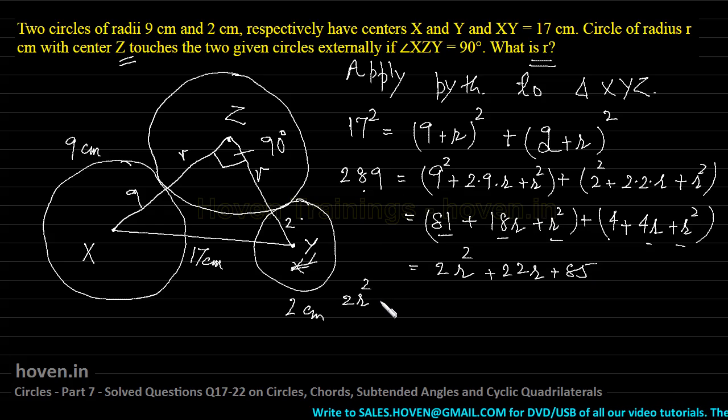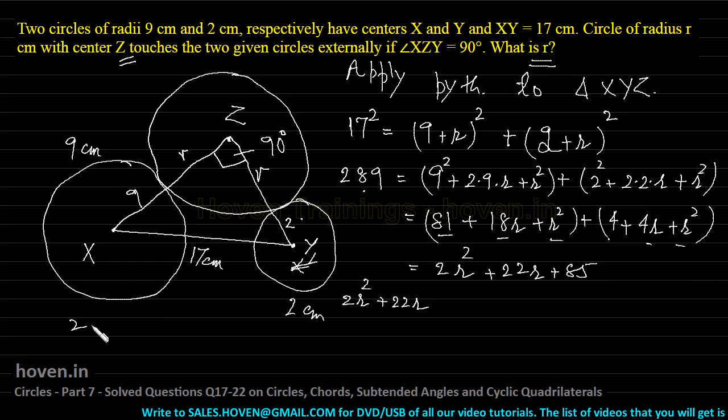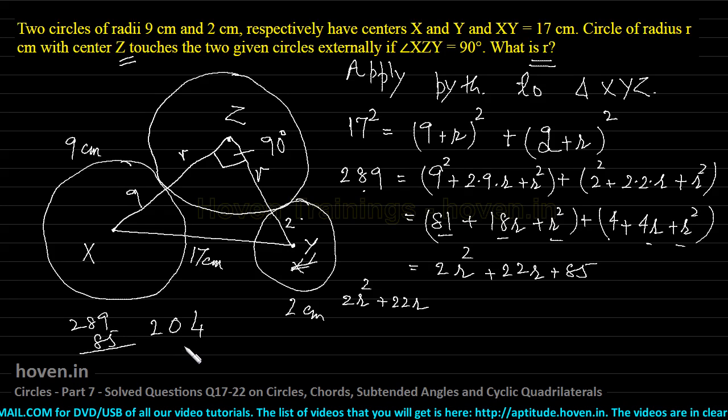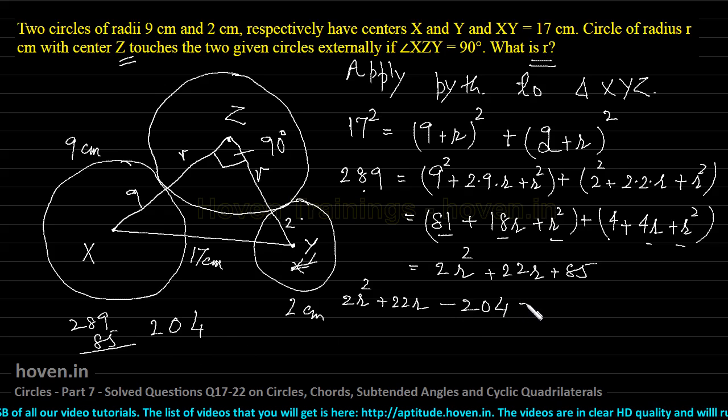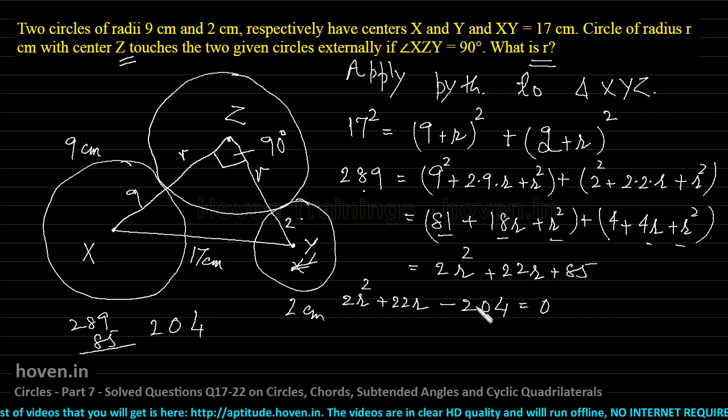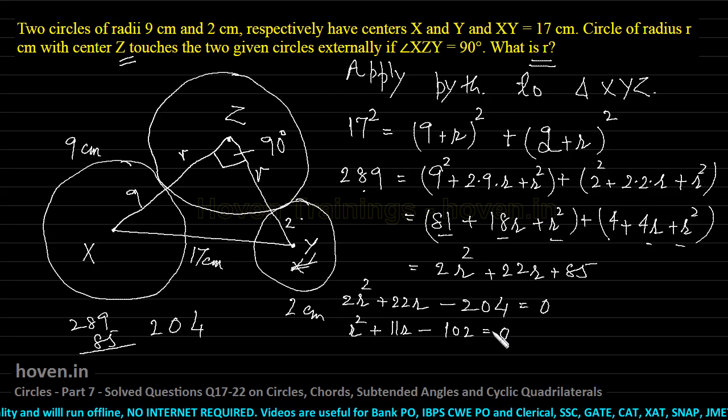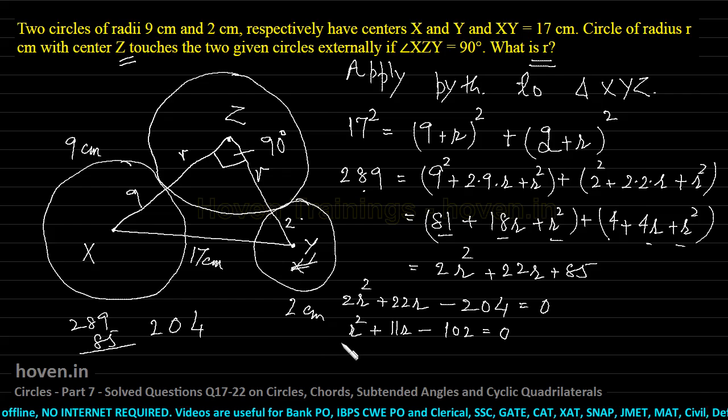Bring 289 to this side and subtract from 85. I will get 2r squared plus 22r. When 85 subtracts 289, we get minus 204. So, 2r squared plus 22r minus 204 equals 0. Because 85 is smaller, 289 is bigger, it will be minus 204. We can remove the factor of 2: r squared plus 11r minus 102 equals 0.